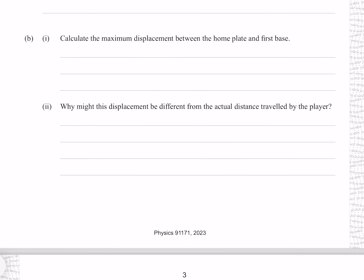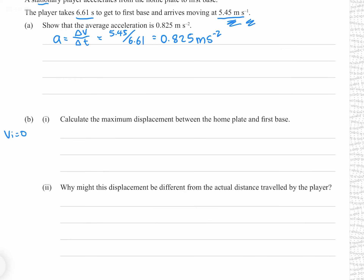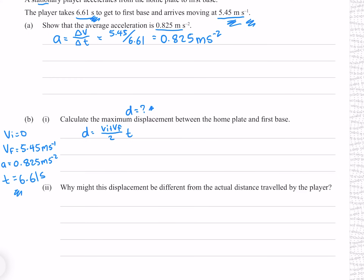Calculate the maximum displacement between the home plate and first base. We know our initial velocity is 0, final velocity is 5.45, acceleration is 0.825, and time is 6.61. We can choose any kinematic equation with distance. Using d equals v_i plus v_f divided by 2 multiplied by t, since v_i is 0 this becomes v_f times t divided by 2, giving 18.0 meters to three significant figures.